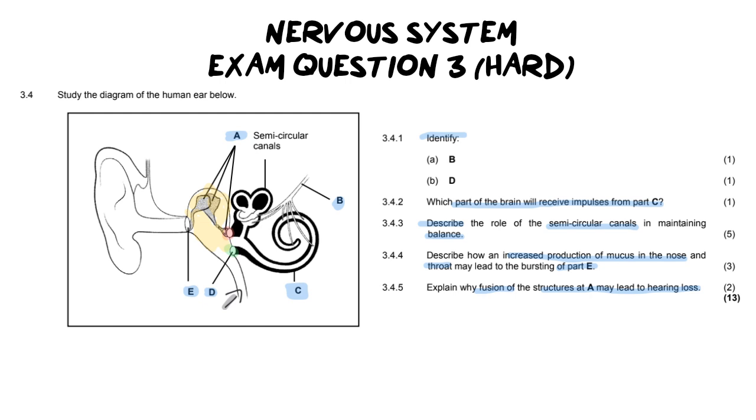So you would say something like, if the ossicle bones are fused together, they are unable to move or vibrate. Therefore, they are unable to pass on the vibrations to the cochlea, resulting in hearing loss. So we're making a statement saying they can't vibrate. And if they can't vibrate and pass on the sound, then they can't pass that sound onto the cochlea.